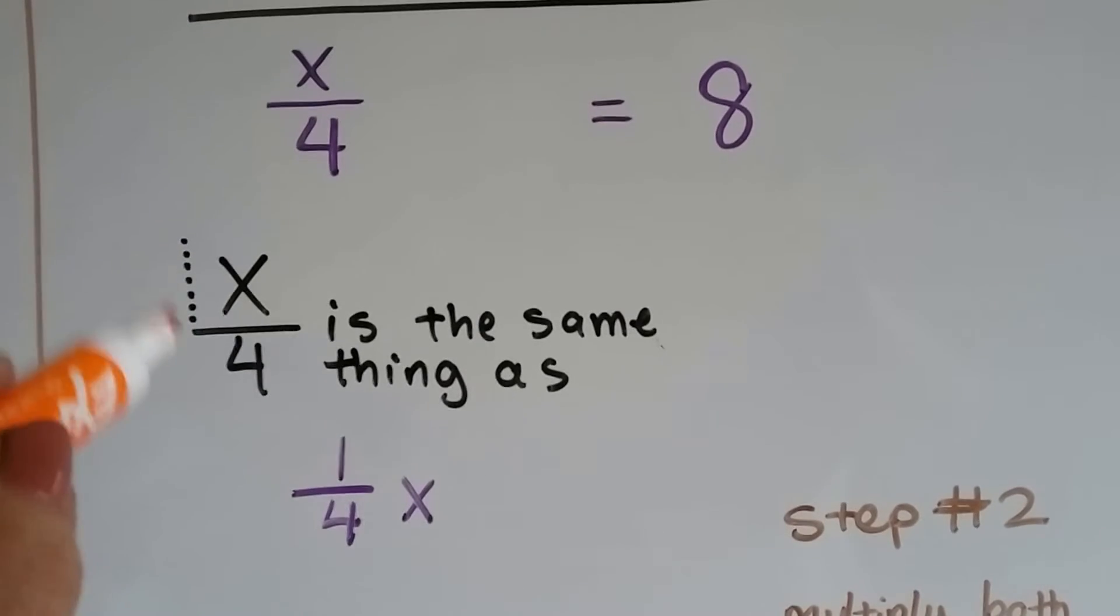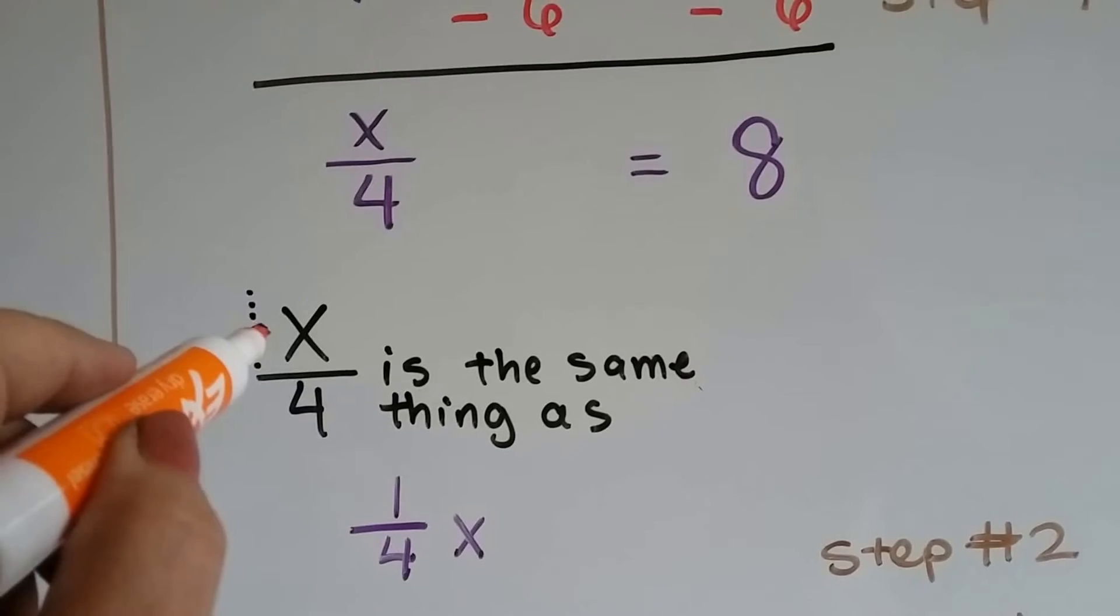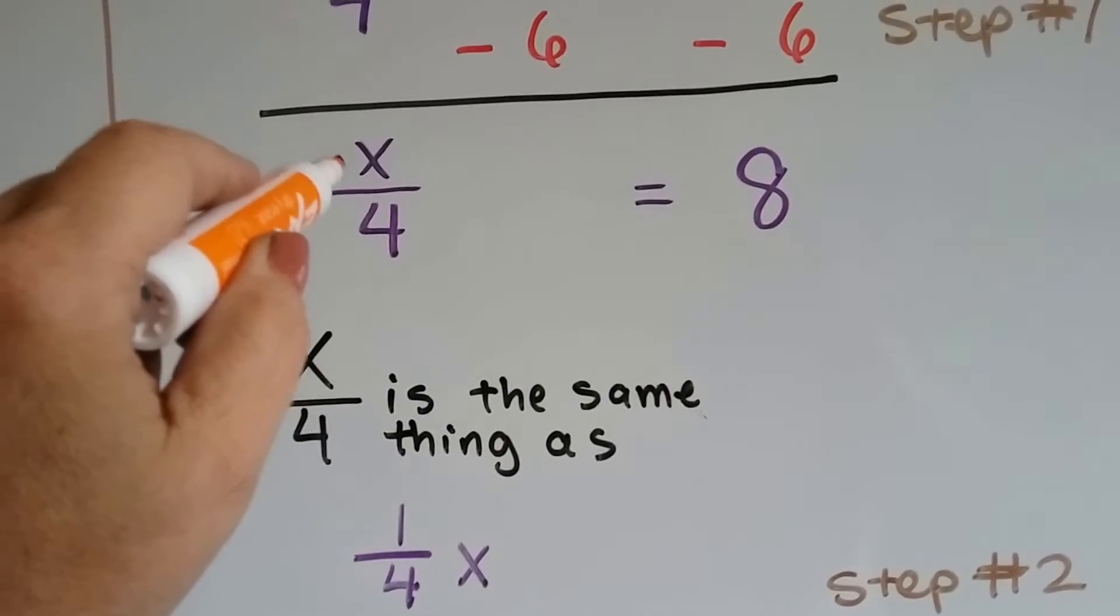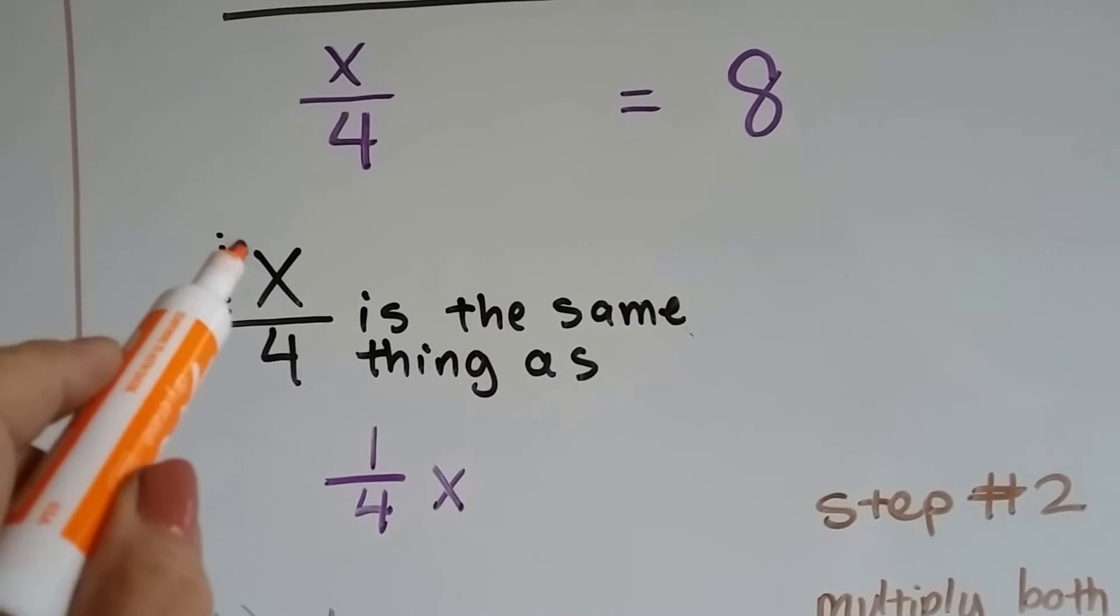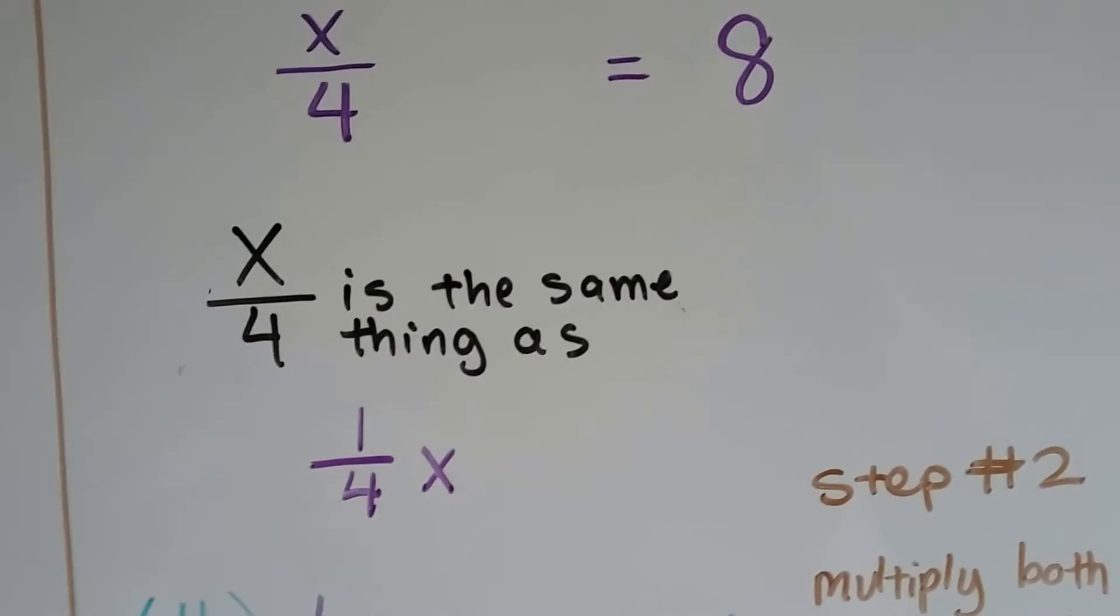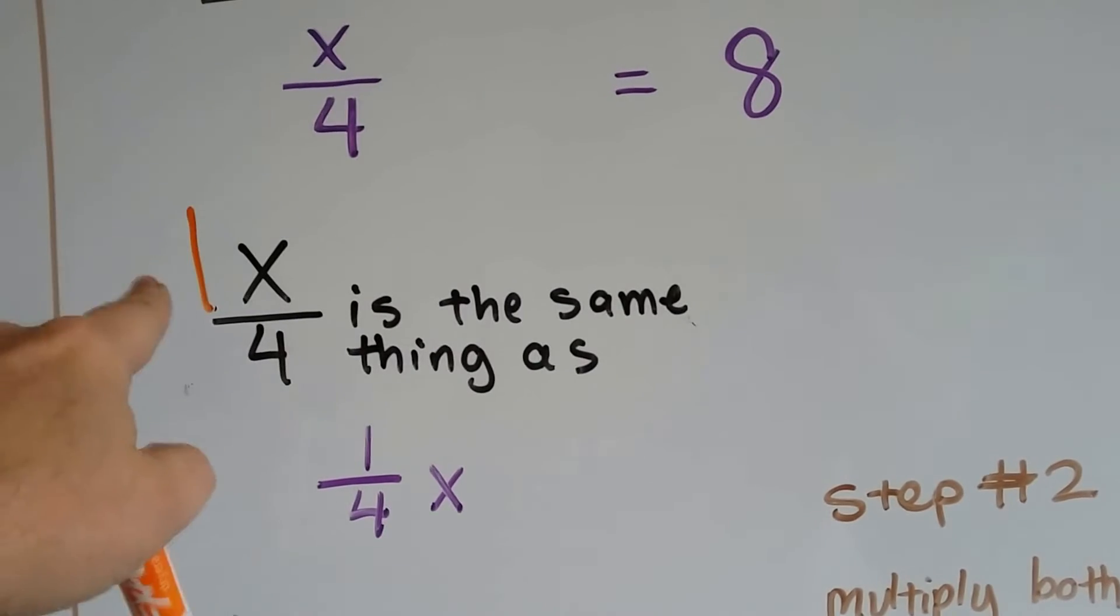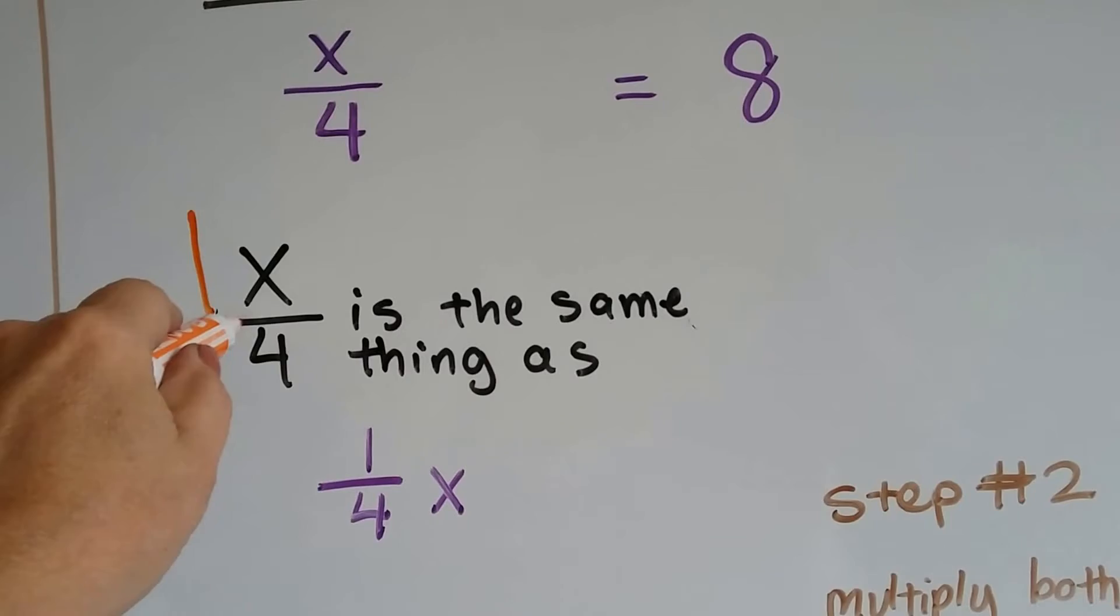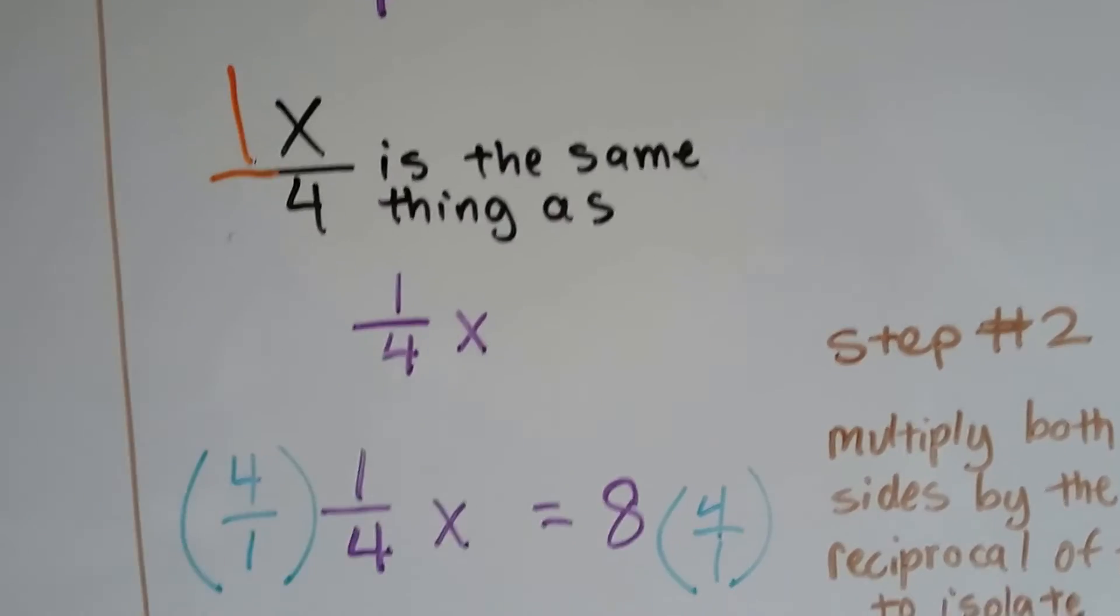So, as we said in a couple of videos ago, there's an invisible 1 in front of a variable. That's not just an x, that's a 1x. So x over 4 is the same thing as saying 1 fourth x.